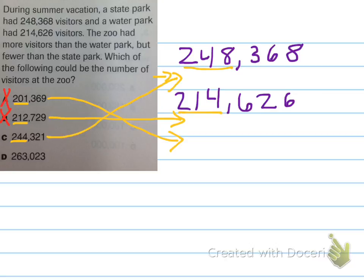So maybe that's my answer. But let's check and make sure that letter D doesn't work either. Let's see. D, 263,023. Well, I see it starts with 263,000. I know that is greater than 248,000. So that cannot be it.